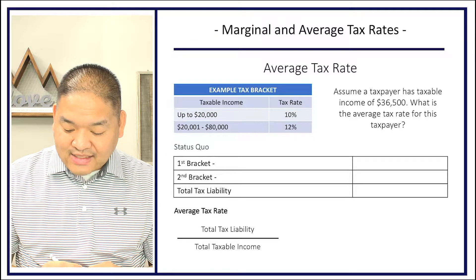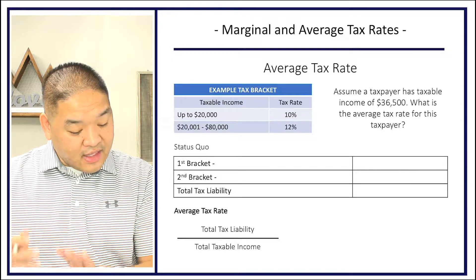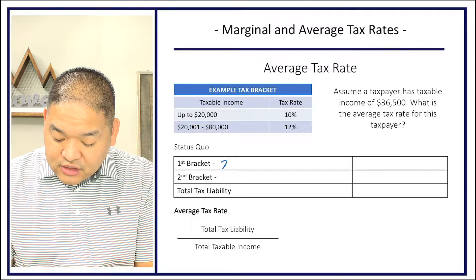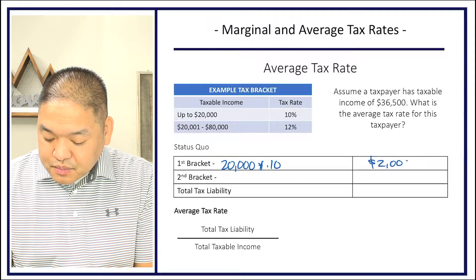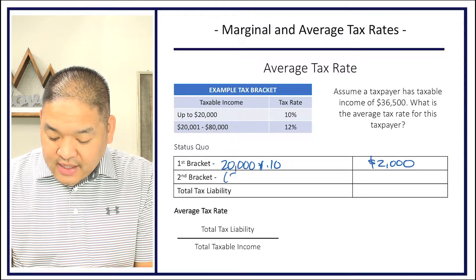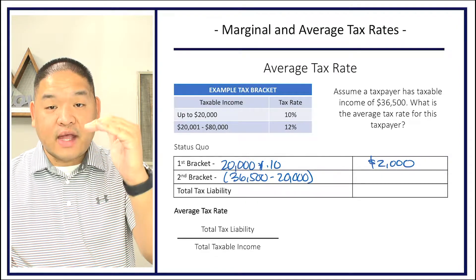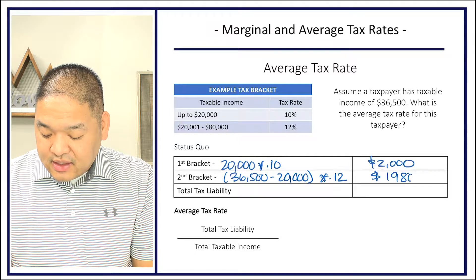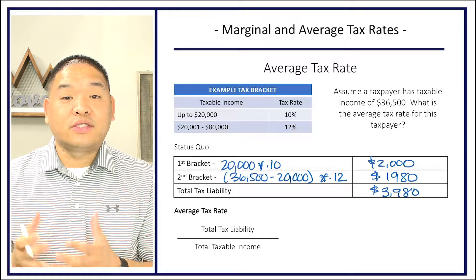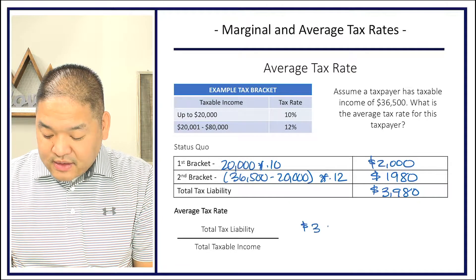Let's calculate the average tax rate for a taxpayer with $36,500 in taxable income. First, $20,000 at 10% equals $2,000. Then $36,500 minus $20,000 equals $16,500, taxed at 12%, giving $1,980. The total tax liability is $3,980.